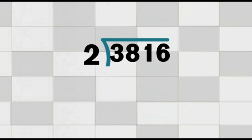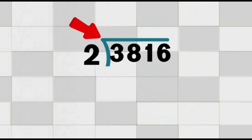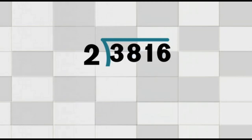Another example. We are going to divide 3,816 by 2. First, we set up the division problem using the long division bracket. We write the number 3,816 under the division bracket — this number is called the dividend, it's the number we want to divide. Then, we write the number 2 outside the division bracket to the left. This number is called the divisor — it's the number we are dividing by.